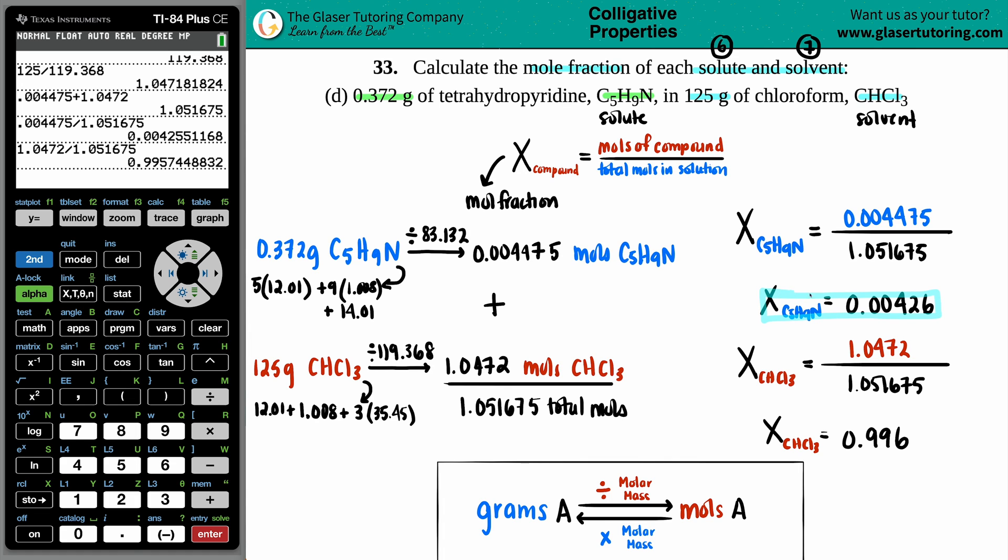Just know that mole fractions do not have any units. They are unitless. If you wanted to convert this into a percent, you could always times by 100, and that will give you an indication as to which one is more. You could clearly see that the chloroform is more because the total fraction is always 1. If you add these two mole fractions up together, you should get 1. And there you go.